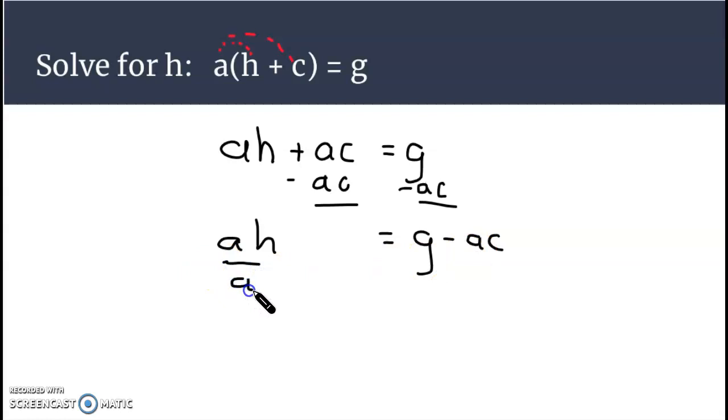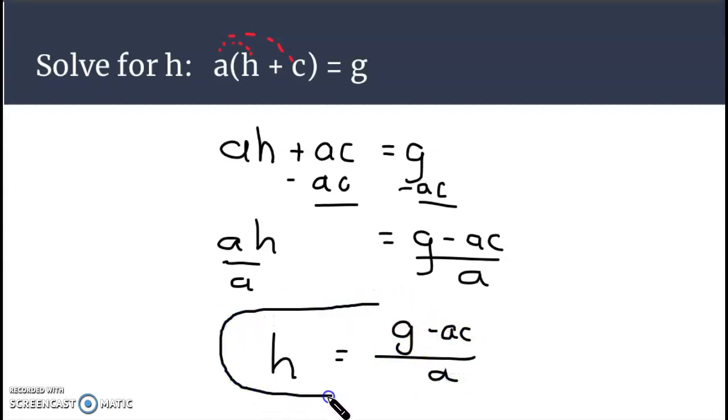So in g, notice there's definitely no like terms over here on the right. G minus ac, I'm just keeping that written as is, and we'll divide both sides by the letter a. h is by itself now and we have g minus ac on the top and a on the bottom. And that is how we solve for h, meaning we get it by itself. Yes, over here on the right is not a nice simple term, but we don't know what g, a, or c is, but we just have the combination of those letters together.